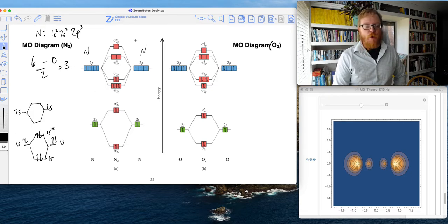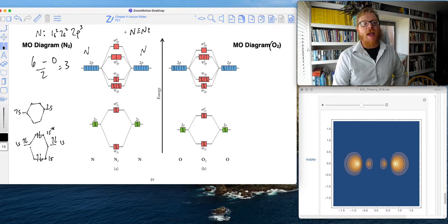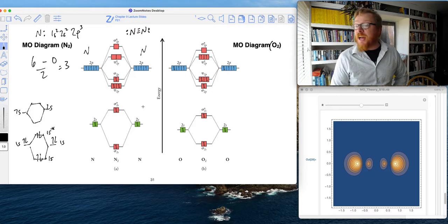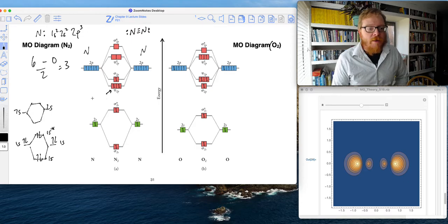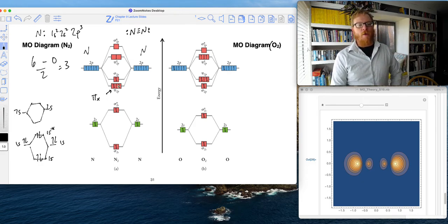And if you recall from our Lewis structure, nitrogen has a triple bond. And that triple bond consists of one pi—I'm just going to call it arbitrarily X, doesn't matter—we'll call that one pi X, one pi Y.